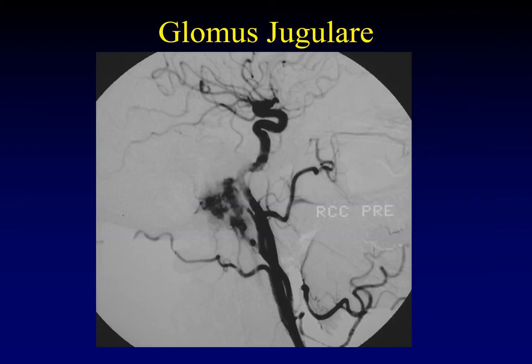Remember that glomus jugulare tumors, like all paragangliomas, are exceedingly vascular. On this angiogram, it lights up just like any of the surrounding vessels. We used to devascularize these before surgical excision, but that has gone out of vogue.